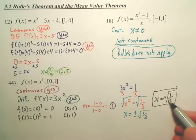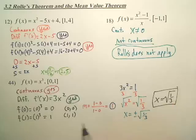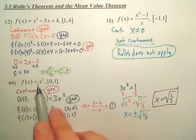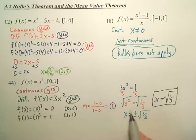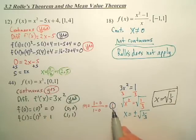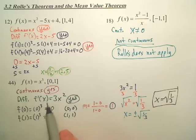Thus, this crazy number, decimal, whatever it is, is where the slope of this graph is 1. And 1 is the mean on the interval.